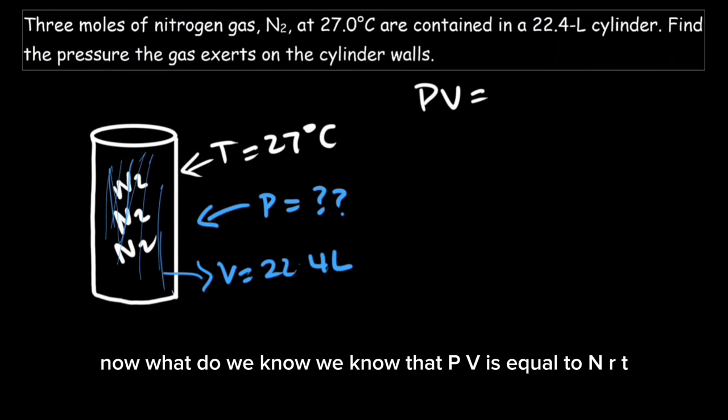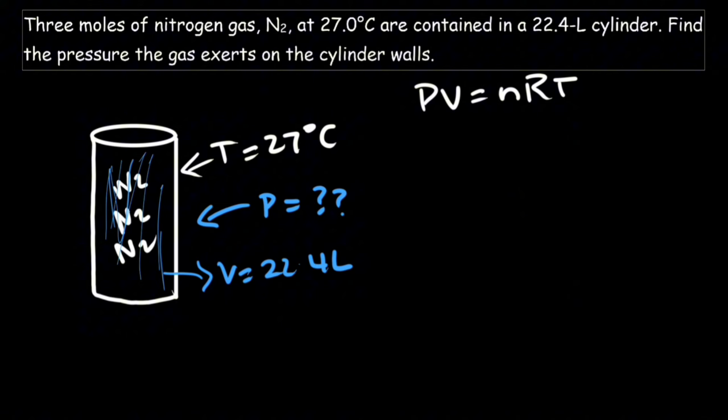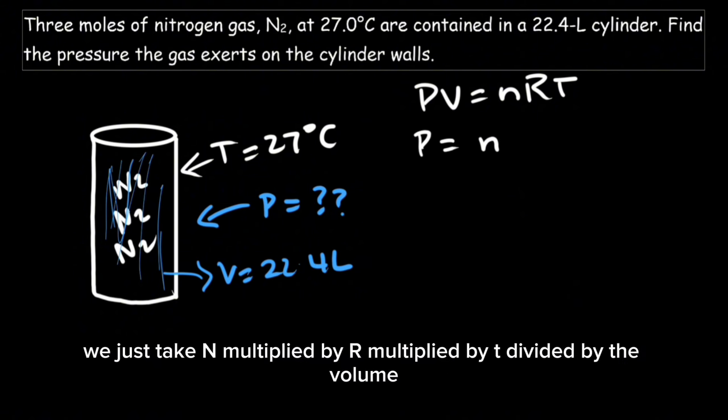Now what do we know? We know that PV is equal to nRT. So to get the pressure, we'll take n multiplied by R multiplied by T divided by the volume.